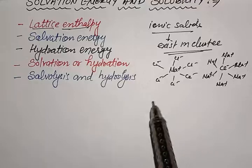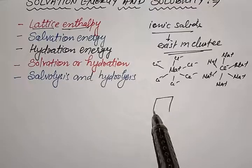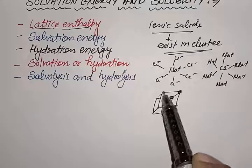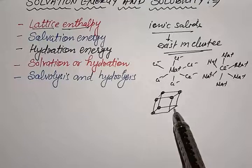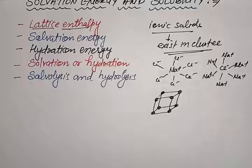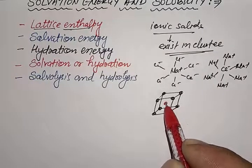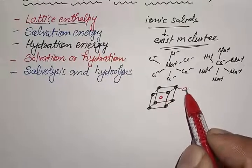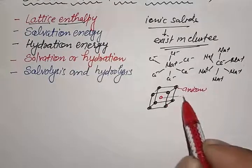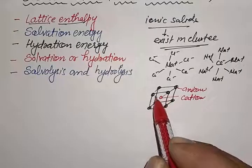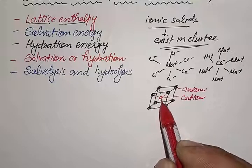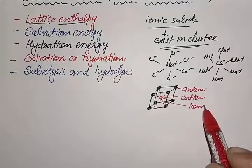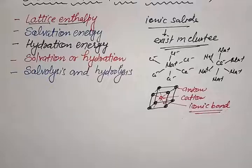In the previous lecture we studied that in the unit cell of ionic solids, anions are present at different positions as well as cations are also present at different positions. These anions and cations are bound together with a strong bonding called ionic bond or ionic bonding.